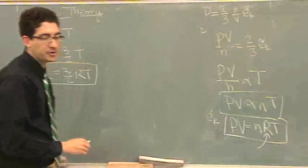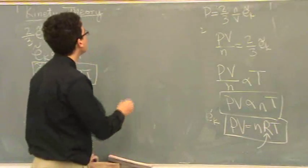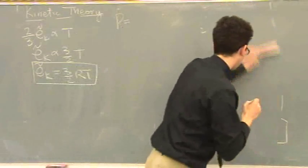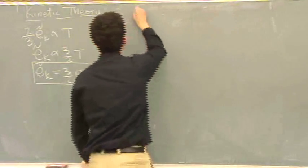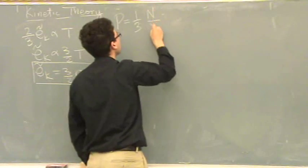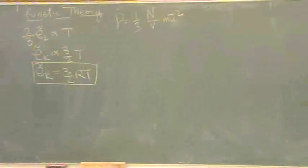Alright, let's continue. We are going to return to an earlier time now. P equals one-third, so this is the old formula, N over V, remember this, MU bar squared. So we had that a while ago.